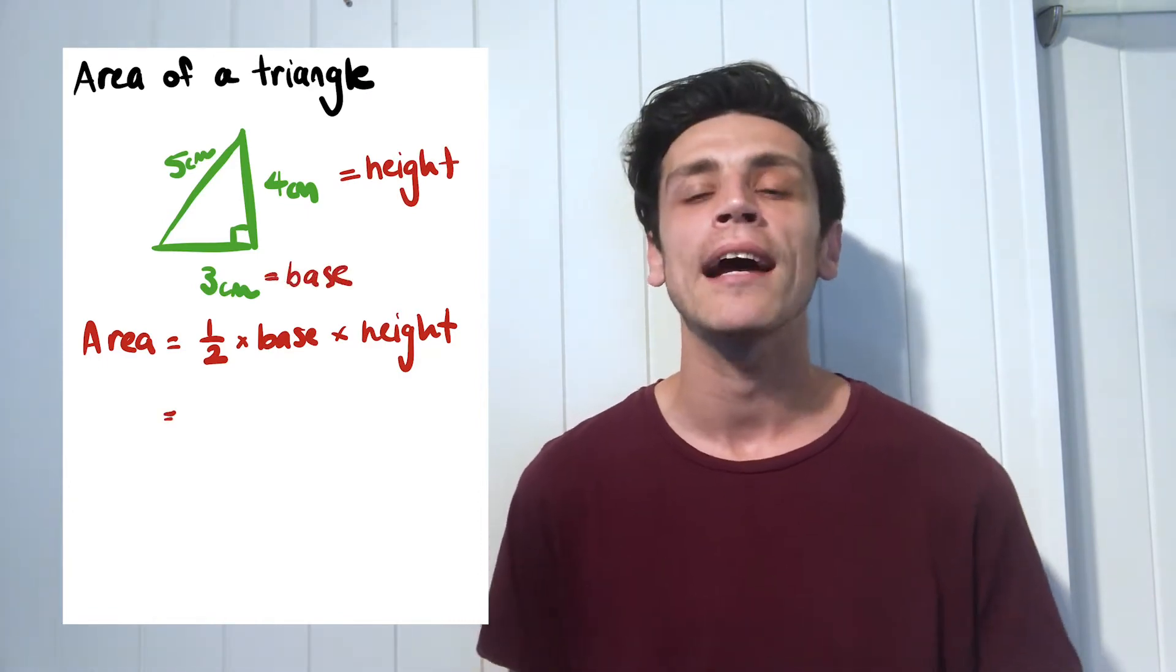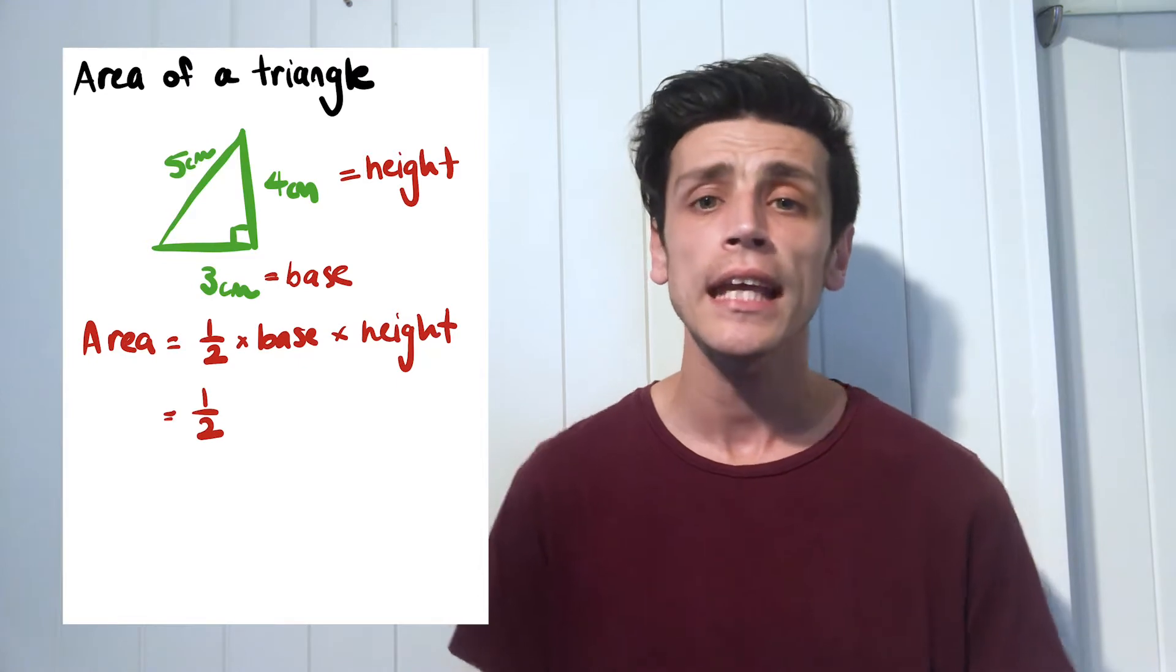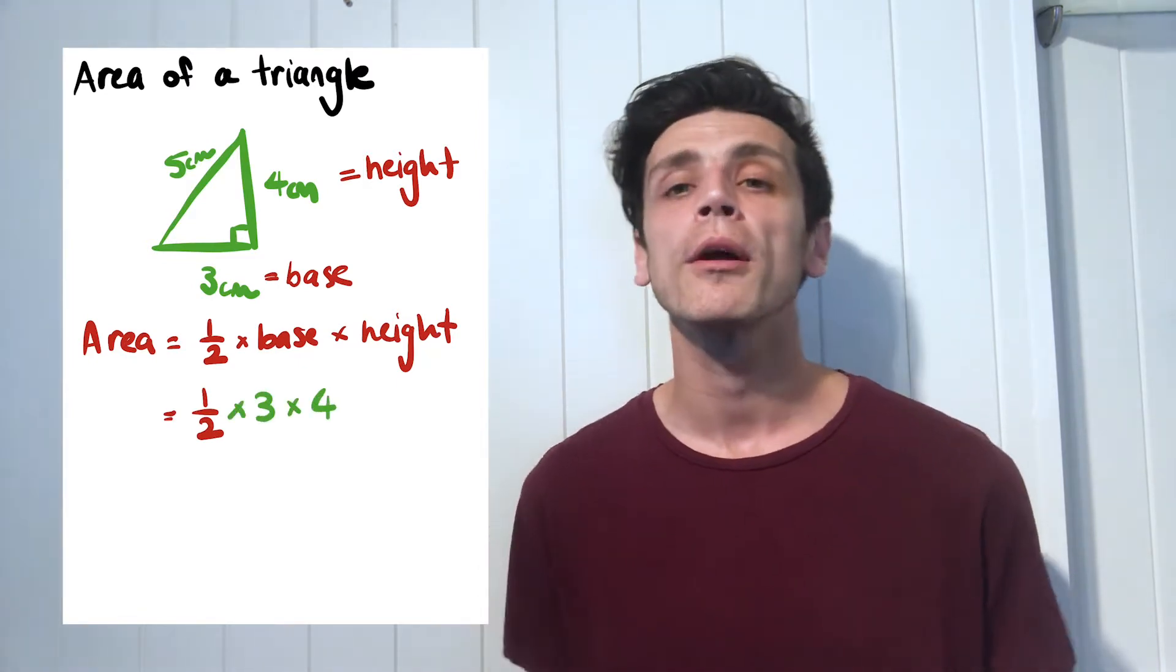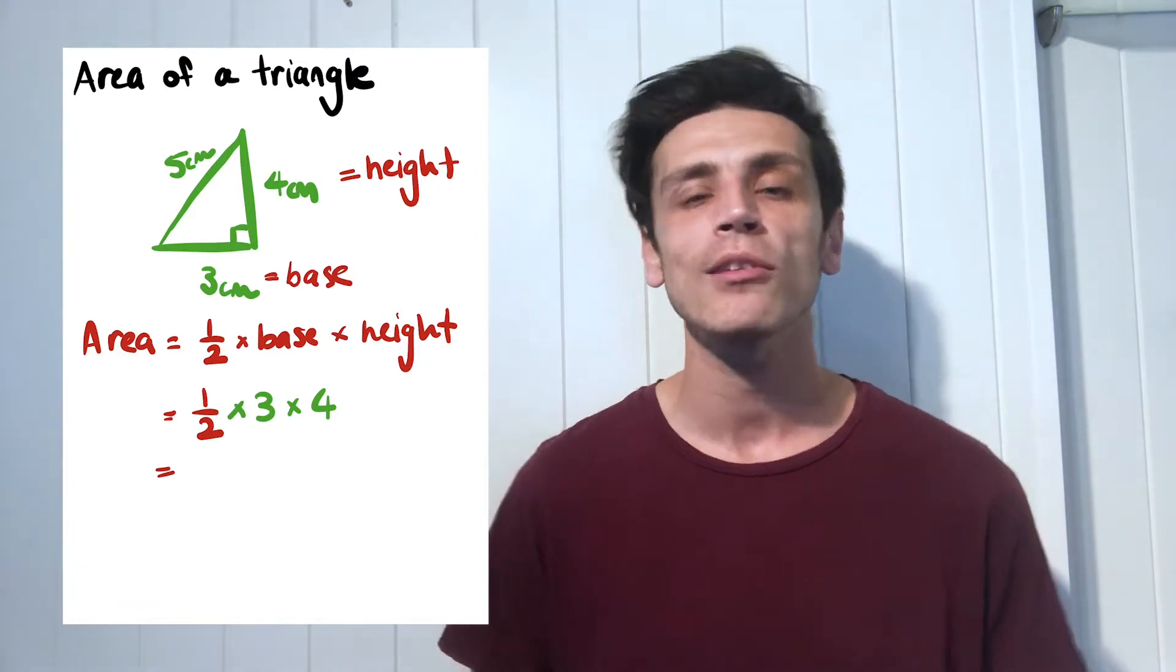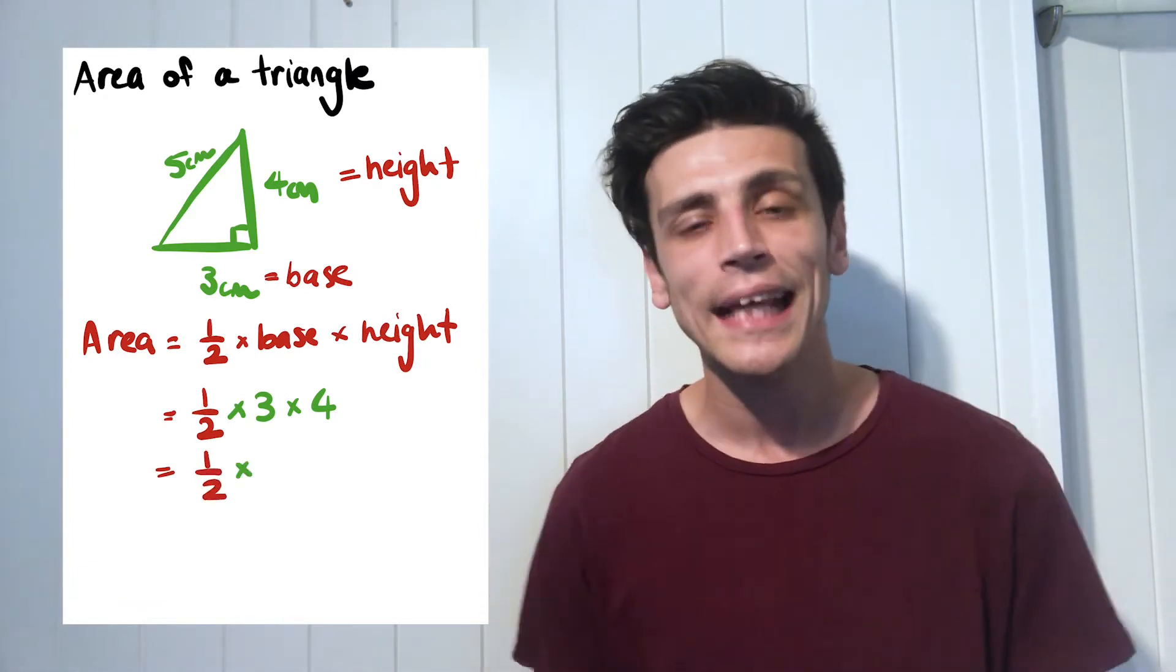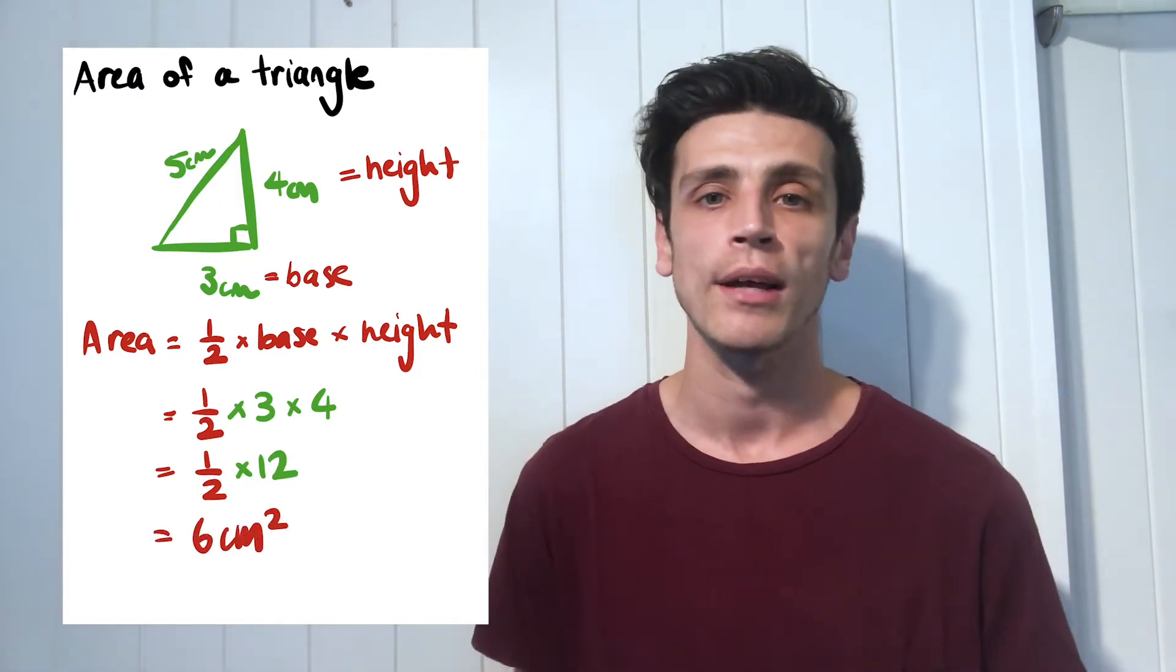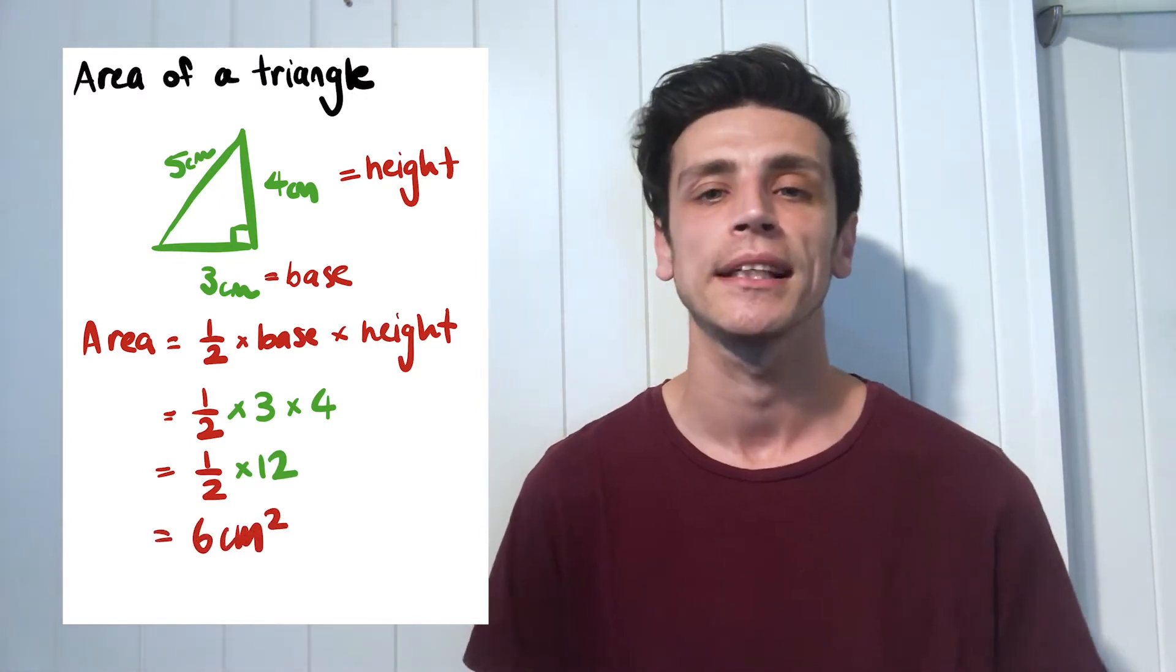So this is going to read now as the area of a triangle is going to equal half of 3 multiplied by 4. Well, 3 multiplied by 4 is 12, and then 12 divided by 2 would give me 6. And in this case because we're using centimeters, our units are going to be centimeters squared. So our answer would be 6 centimeters squared.